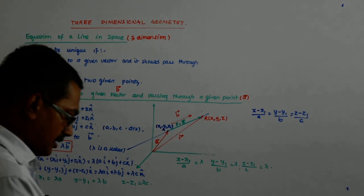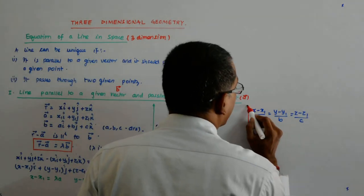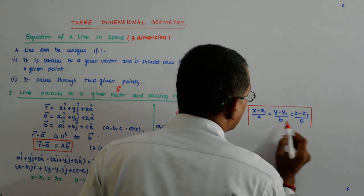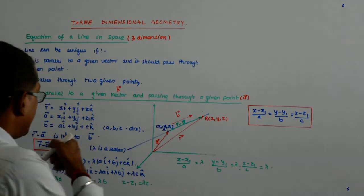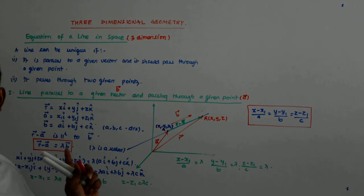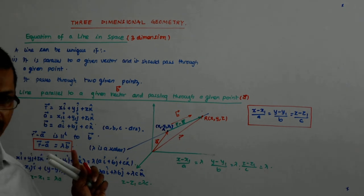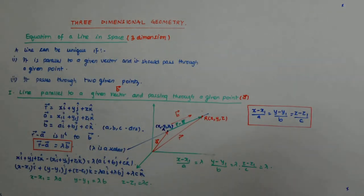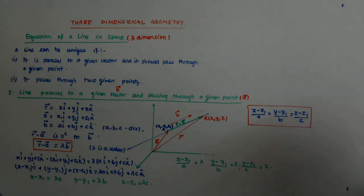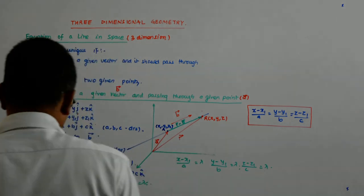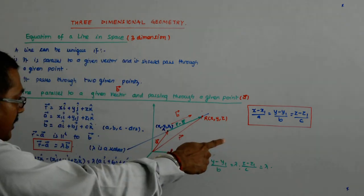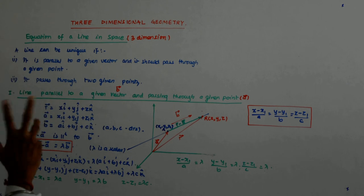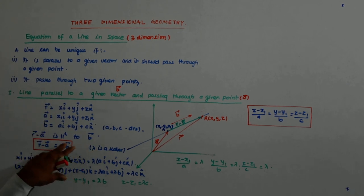From these three equations I get: (x minus x1)/A = lambda, (y minus y1)/B = lambda, (z minus z1)/C = lambda. Therefore: (x minus x1)/A = (y minus y1)/B = (z minus z1)/C. This is your Cartesian form of the equation. From where did I get this? From the vector form. Did it take even a second to write the vector form? No — from the vector form we can directly get the Cartesian form.